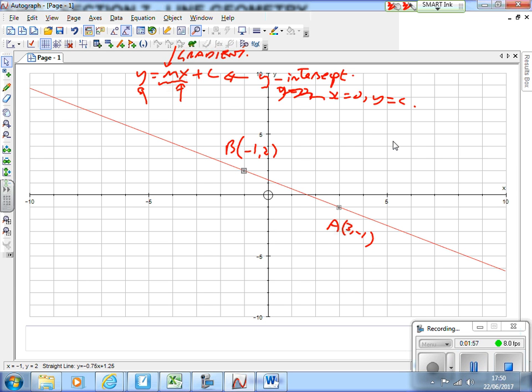So m is our gradient, and the formula for m is y₂ - y₁ over x₂ - x₁. What is y₂ and y₁? Well, if you've got two coordinates A which is (x₁, y₁) and B which is (x₂, y₂), then you're literally just following the formula.